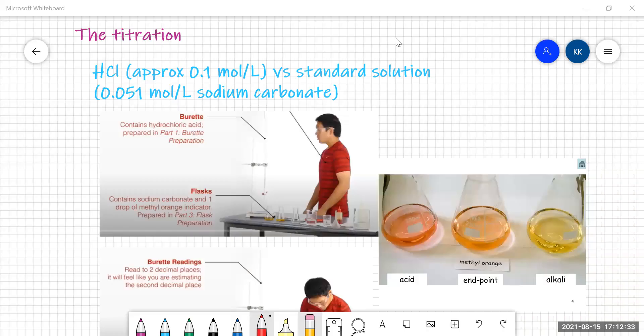We saw in our last video how to calculate the concentration of your standard solution of sodium carbonate once you've made it. We found out that the concentration of the standard solution I had made was 0.051 moles per litre of sodium carbonate.